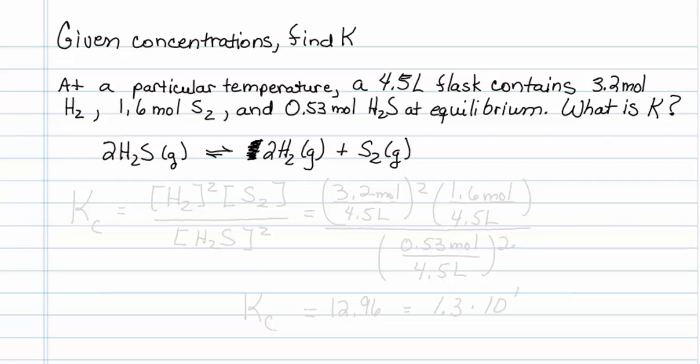This is how given concentrations to find an equilibrium constant. At a particular temperature, a 4.5 liter flask contains 3.2 moles H2, 1.6 moles S2, and 0.53 moles H2S at equilibrium. What is K?